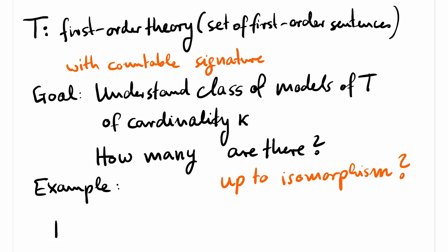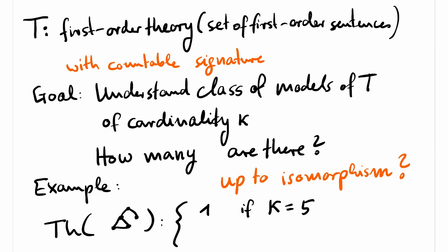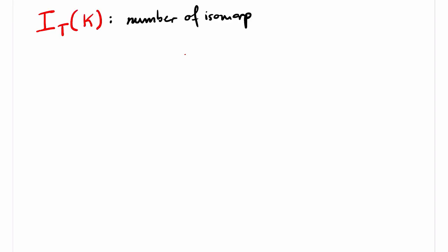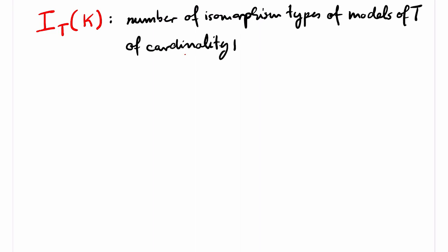So isomorphic models should only be counted once. For example, if we look at the first-order theory of some finite graph with five vertices, then there is one model of size 5. All other models must be isomorphic to this model because with first-order sentences, we can completely describe the isomorphism type of our finite graph. I(T, kappa) denotes the number of isomorphism types of models of T of cardinality kappa. This function is sometimes called the spectrum of T.